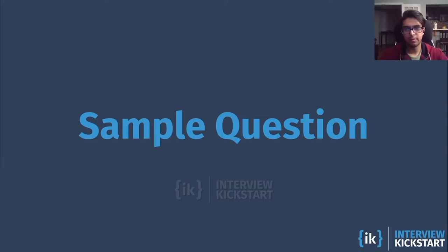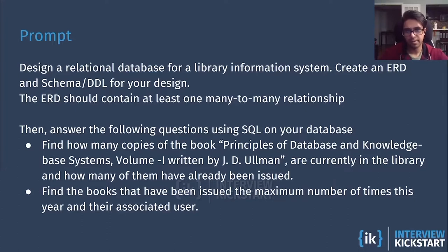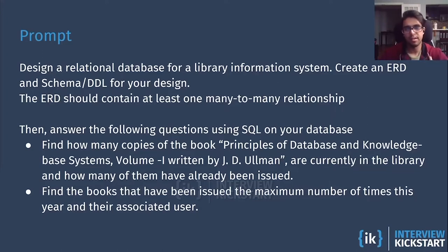So here we have a prompt — the prompt says: design a relational database for a library information system, create an ERD and schema DDL for our design. The ERD should contain one many-to-many relationship. Then below it has two additional SQL questions to answer from our design. At first glance, it seems like we don't really have requirements on what we need to implement in our ERD and schema. But if you look at the SQL questions, paying attention to those is what's going to actually help you decide what tables, entities, and columns you're going to need to keep track of.